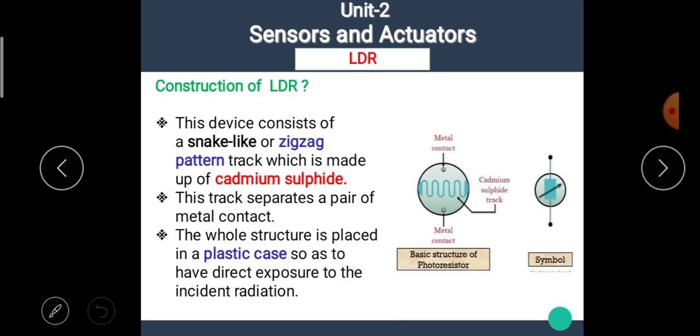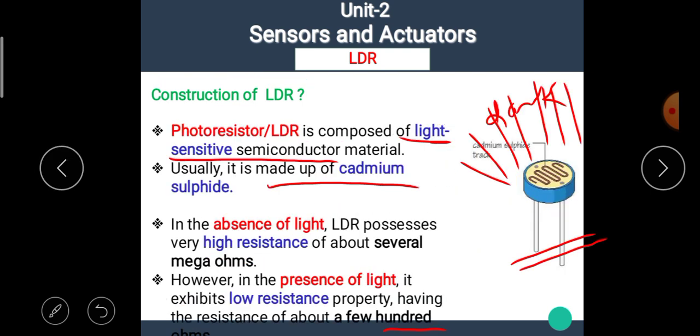Let's see the detailed construction of LDR. This device consists of a snake-like or zigzag pattern which makes up of cadmium sulfide. That means here we can say that this is a snake-like pattern or zigzag track which is made up of the cadmium sulfide material. The cadmium sulfide is a photo sensitive or light sensitive material. This track separates a pair of metal contacts. That means at both sides of this track, we get metal contacts for the connection. The whole structure is placed in a plastic case so as to have direct exposure to the incident radiation.